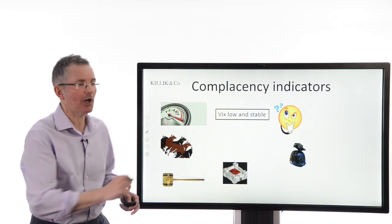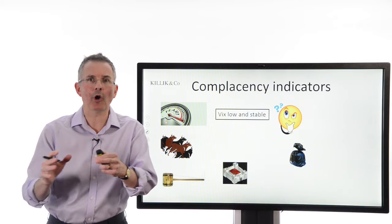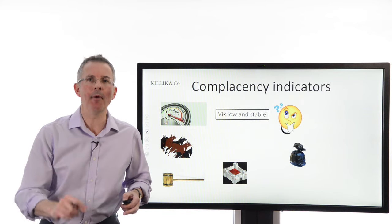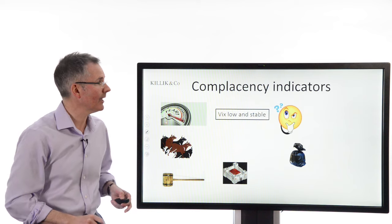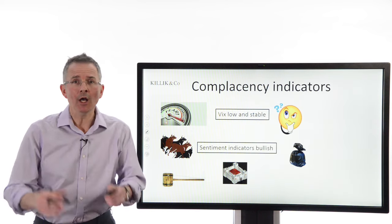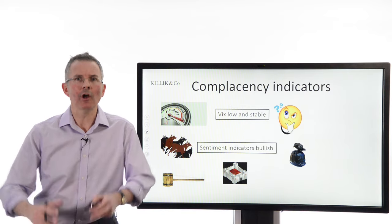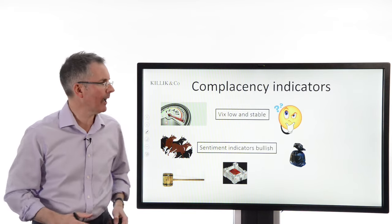The fear gauge in Chicago. The Chicago Board Options Exchange VIX indicator has been low and stable for a long time. That can suggest complacency. Number two, the investor sentiment indicators, and there are several around, are all bullish. Everyone's confident. Everyone's buying.